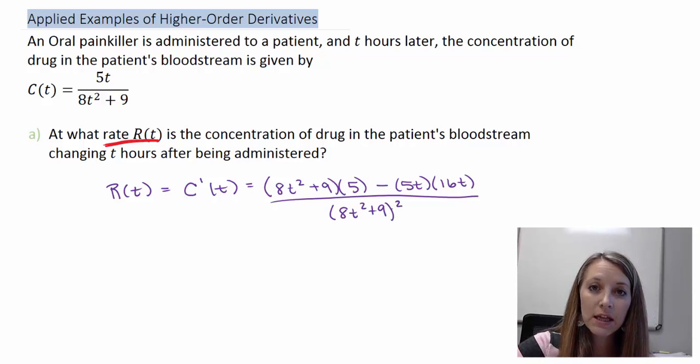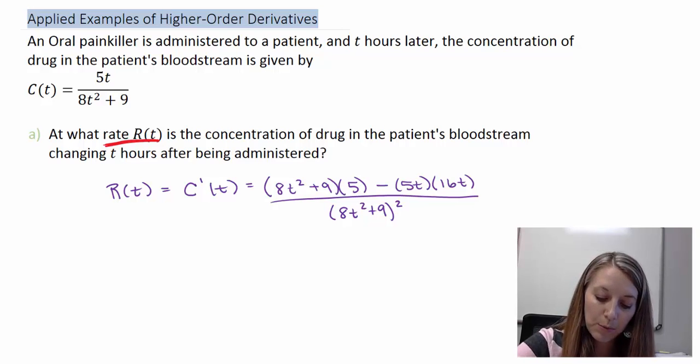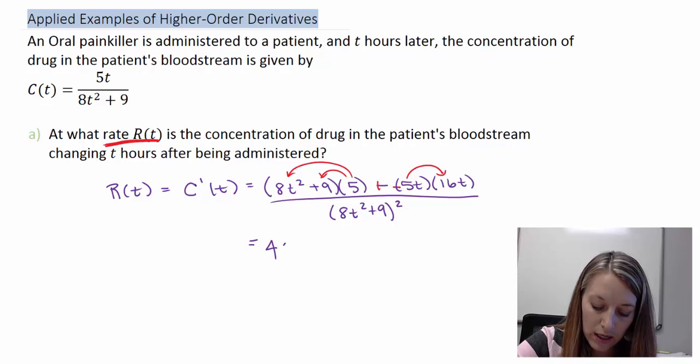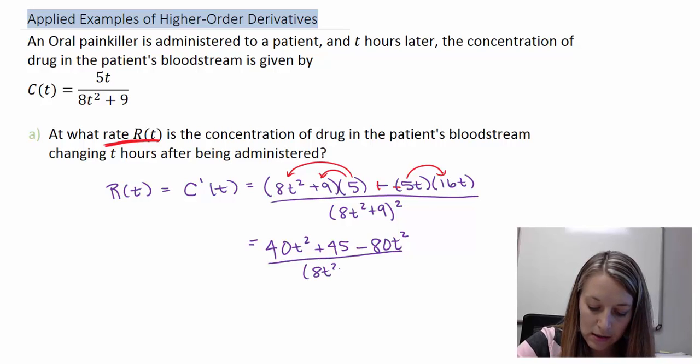So, I've just taken the derivative by using my quotient rule. So, let's go ahead and simplify. I'm going to do that by distributing my 5 through here and distributing my negative 5T through here, which really means I'm just going to multiply it. So, this gives me 40T squared plus 45 minus 80T squared over my denominator as is. And then, 40T squared minus 80T squared gives me negative 40T squared plus 45.